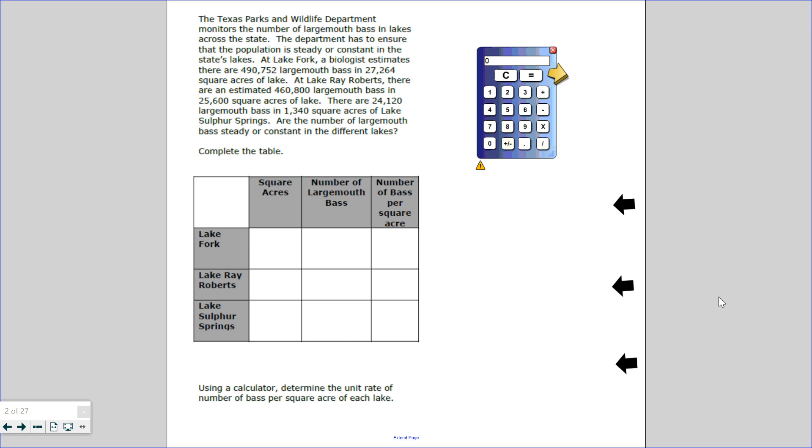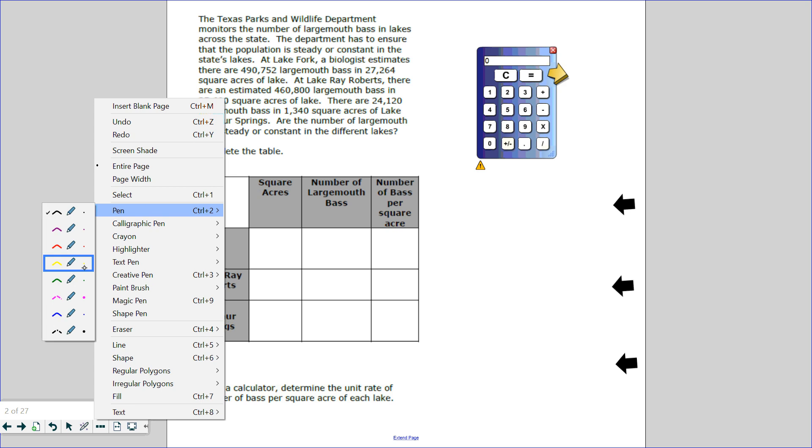That means there should be the exact same number of fish per acre in one lake to another. You don't want to have one lake that has overpopulated fish while another lake has hardly any fish. So at Lake Fort, a biologist estimates there are 490,752 largemouth bass in 27,264 square acres of lake.